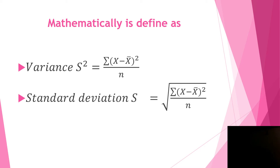Looking back at mean deviation, we were using absolute values, but now we are using squares. That is the difference between mean deviation and variance — we replace the absolute value with squares. So s² equals the sum of (x minus x̄)² divided by n, the number of observations.